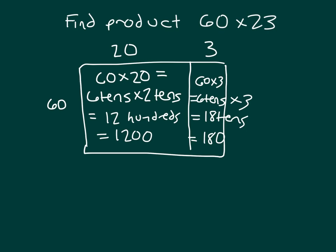So our product of 60 times 23 is 1,200 plus 180, which equals 1,380. So the product is 1,380. Read the whole thing: 60 times 23 equals 1,380. And so we use the area model to help figure out that answer. We had the partial product of 60 times 20 added together to the partial product of 60 times 3.